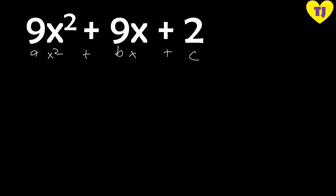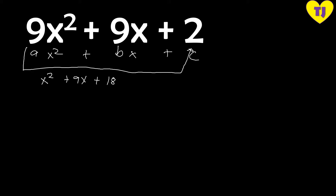The sliding method means we literally slide a number onto another term. We slide the coefficient 9 from the first term to our constant term c, and we multiply: 9 times 2 gives 18. So the expression becomes x squared plus 9x plus 18.